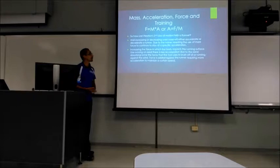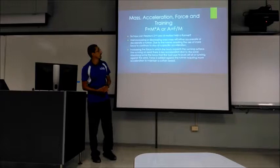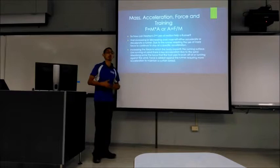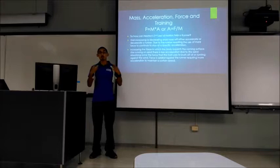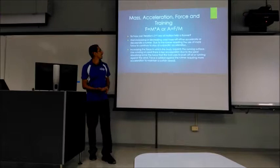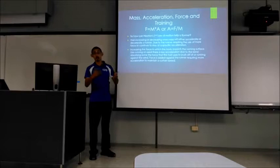We already know that force equals mass times acceleration, or another way of using that formula is acceleration equals force over mass. When it comes to training, we can increase the mass of the runner by giving them either hand weights or a weighted vest to stimulate the lower leg muscles to produce more force during their training, thus giving that runner more acceleration when that vest is removed and that extra mass is taken away.